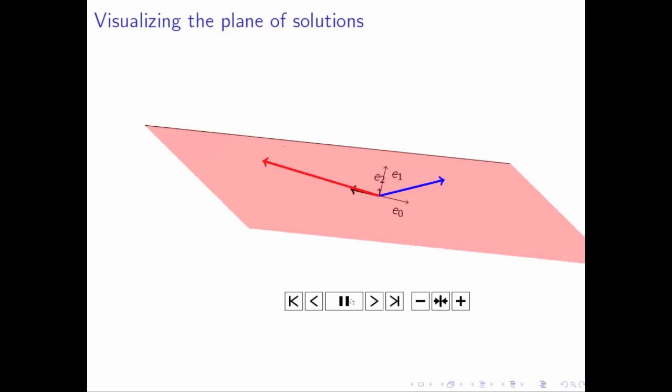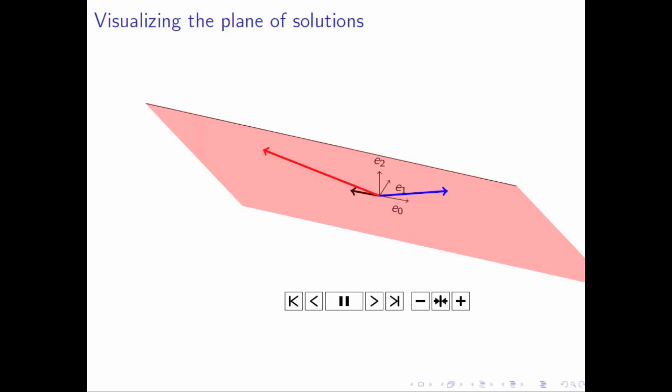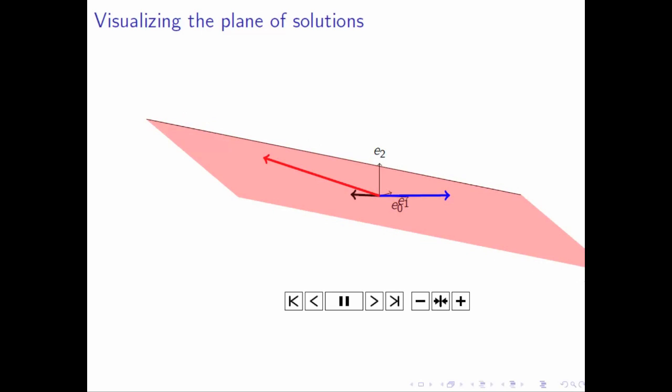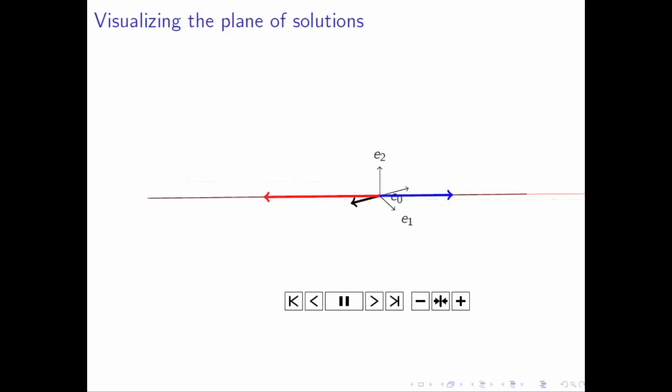Well, we found two vectors in the null space, the blue vector and the red vector, that defined this pink subspace.